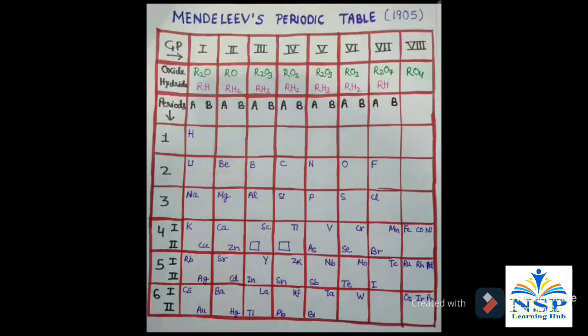Hello friends, today we study about Mendeleev's periodic table which is published in 1905. Dmitri Mendeleev is a Russian chemist. He was the first to make a very significant contribution in the formation of periodic table.